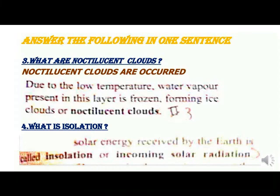Question 3. What are noctilucent clouds? Noctilucent clouds occur due to low pressure. The water vapour present in this layer is frozen, forming ice clouds or noctilucent clouds.